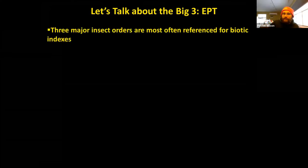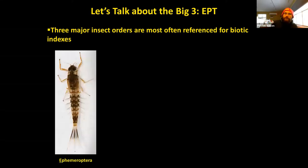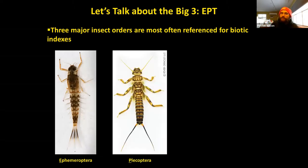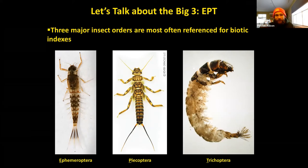Let's talk about the big three. Three major insect orders are most often referenced for biotic indexes: EPT. E is for Ephemeroptera — the mayflies. P is for Plecoptera — the stoneflies. T is for Trichoptera — the caddisflies. All three of these insect orders are part of group one. If a stream has all three present, it's nice and healthy. If these insects are missing, something is probably going on with water quality that we want to investigate.